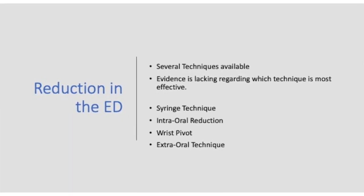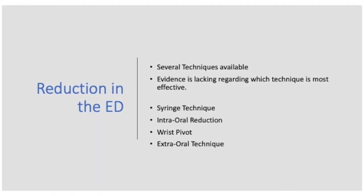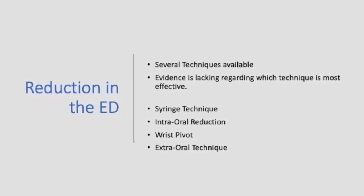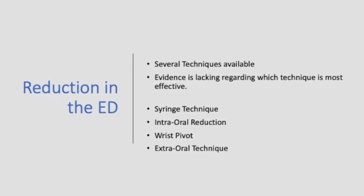To reduce a TMJ dislocation, the standard approach is the intraoral approach: place your padded, gloved thumbs on both molars and push down and back. The extraoral approach involves standing in front of or behind the patient and manipulating the jaw. Another technique is the syringe method — place a 10 ml syringe on the dislocated side and ask the patient to chew on that side to achieve reduction. Although many techniques are described, there is a lack of evidence as to which method is superior.